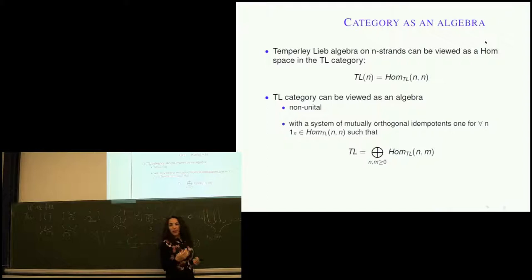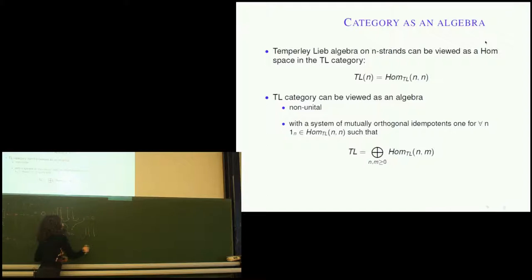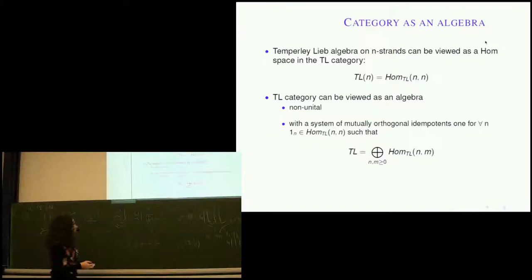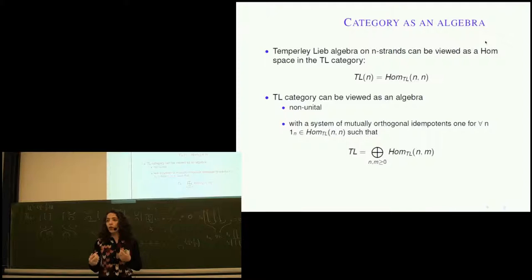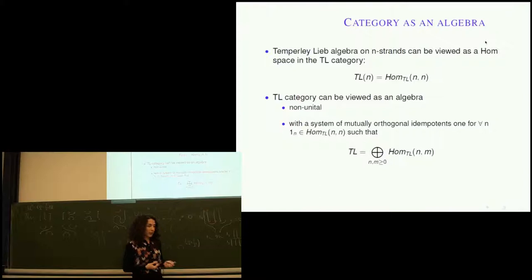Instead of one unit, we get orthogonal idempotents, one for each n ≥ 0. For each n, you have a diagram with n through-strands. If you want to work with infinite things, you can add all 1_n's together and they will act like a unit. Mutually orthogonal means: combining 1_3 with 1_5 gives zero. The full Temperley-Lieb algebra is a direct sum over all Temperley-Lieb algebras on fixed number of elements and all possible pairs.